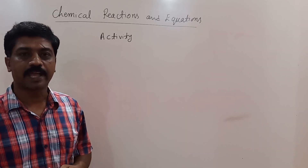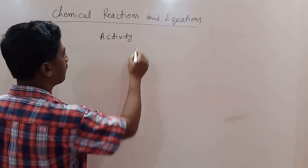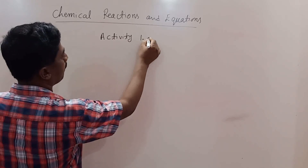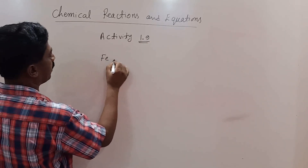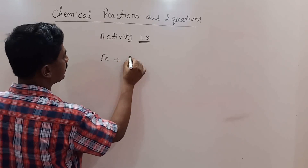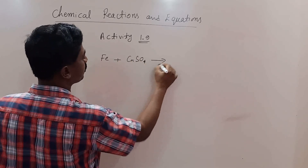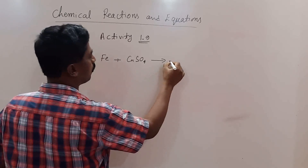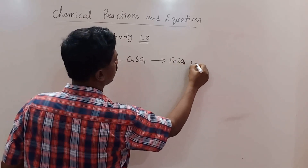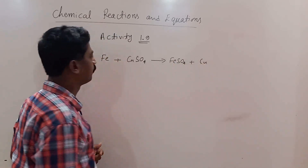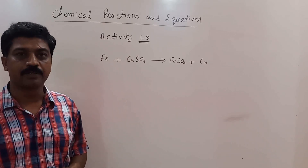That's it for activity 1.9. When an iron nail is put into a blue copper sulphate solution, it forms iron sulphate and copper — a displacement reaction.